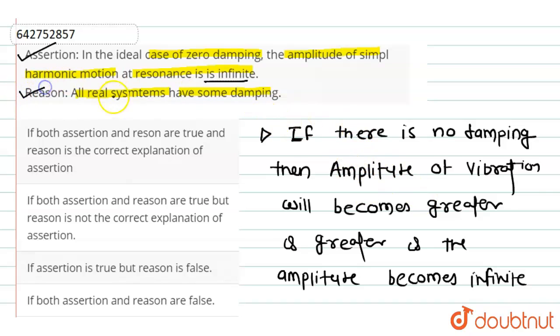And the reason is all real systems have some damping. It is also true because to limit the amplitude there must be a damping in all real systems.